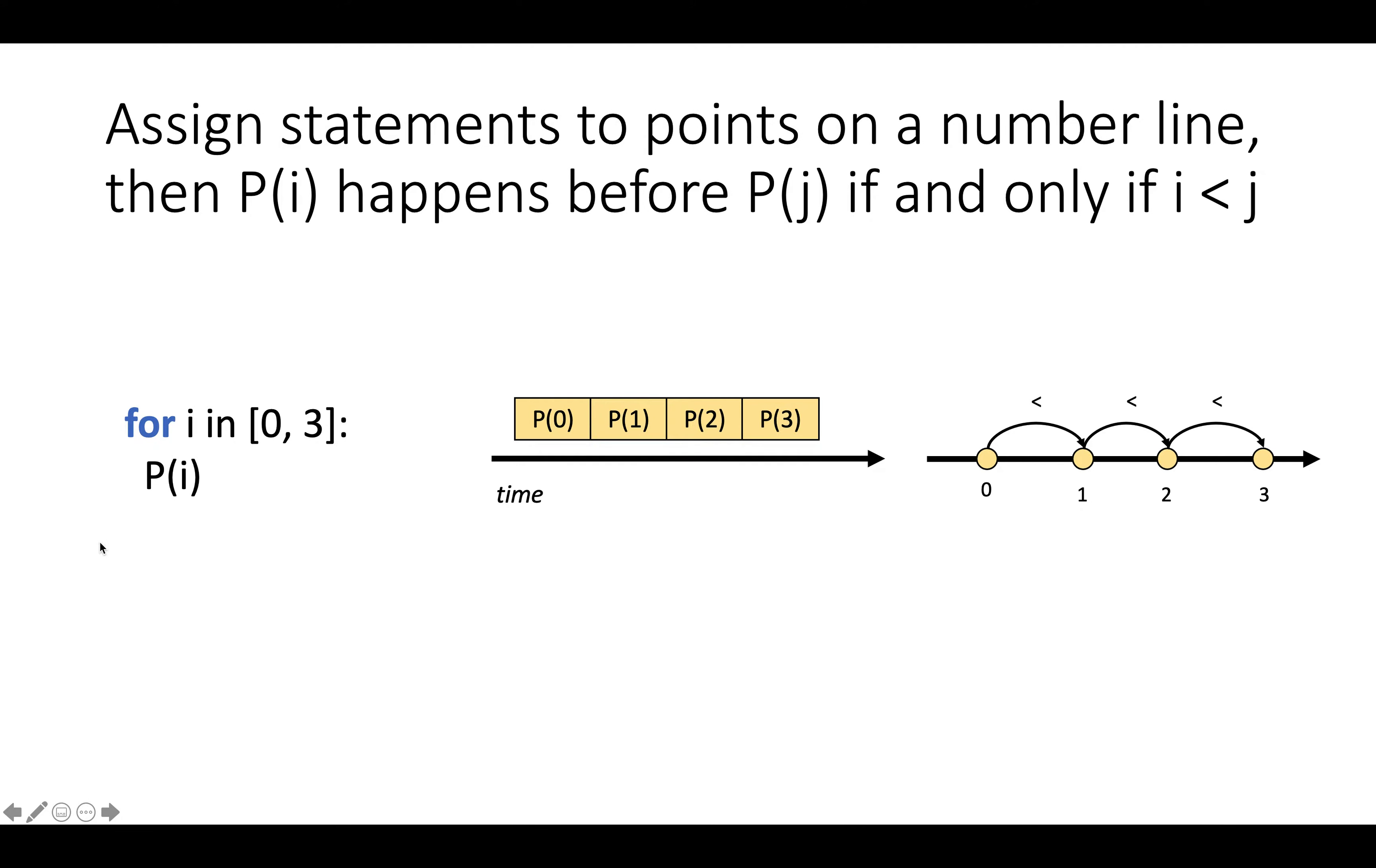And a very straightforward way for this one-dimensional loop is to assign statements to points on a number line, and then we'll say p(i) happens before p(j) if and only if i is less than j. So we can think of the execution trace of this for loop if time goes from left to right as executing statement p(0), then statement p(1), then statement p(2), then statement p(3).